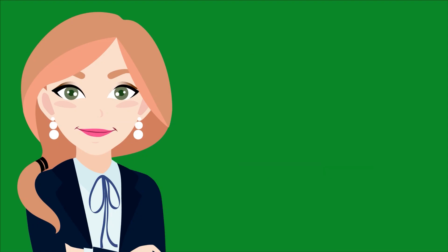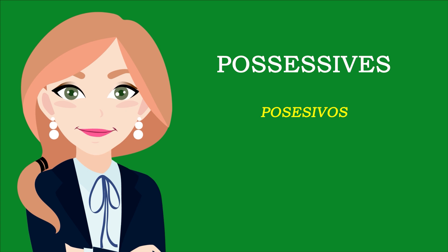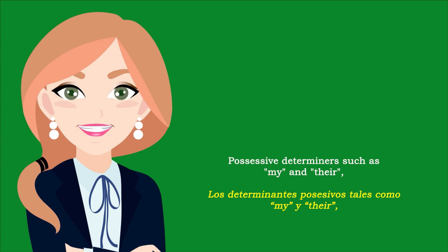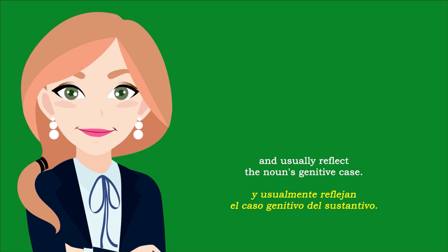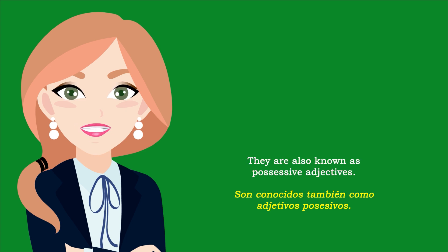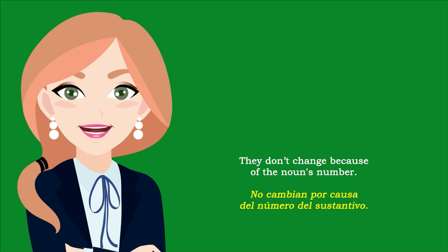Determiners. Possessive determiners such as my and their modify a noun by attributing possession or other sense of belonging to someone or something, and usually reflect the noun's genitive case. They are also known as possessive adjectives. They don't change because of the noun's number.